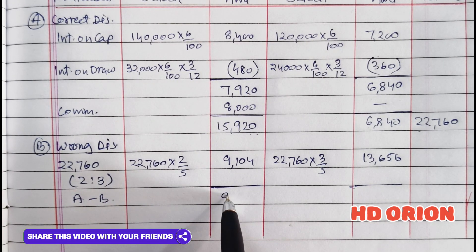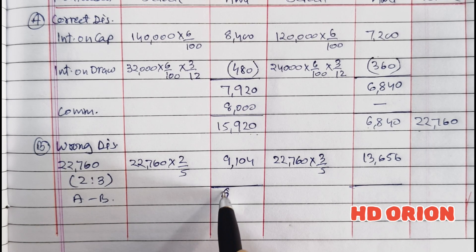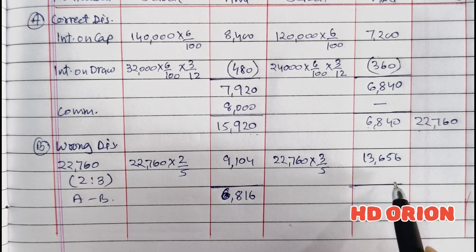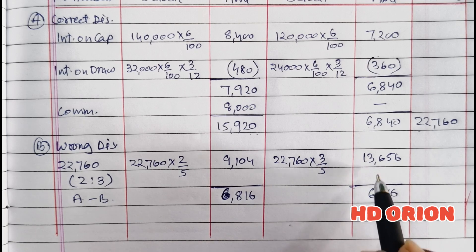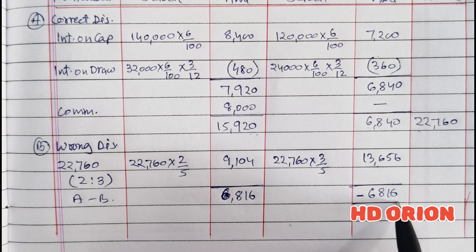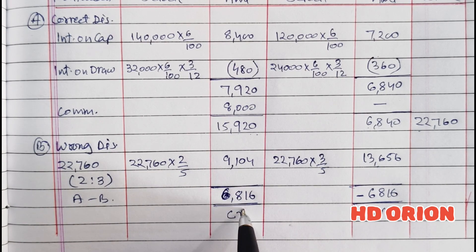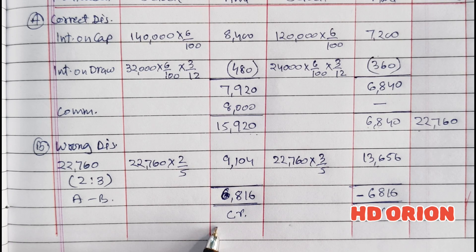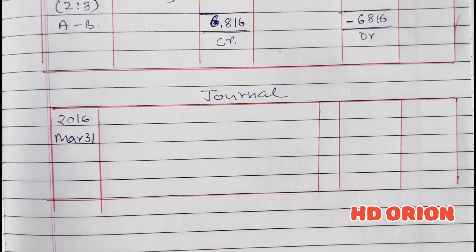So Mita should get Rs. 6,816 more, and Usha should give back Rs. 6,816 because it comes out as a minus figure. The A amount is less and the B amount is more. Whenever we get a minus figure, the capital account is to be debited, and for a positive figure, the capital account is to be credited. So Usha's capital account will be debited and Mita's capital account will be credited. Current account will not be maintained here because the capital account is fluctuating.